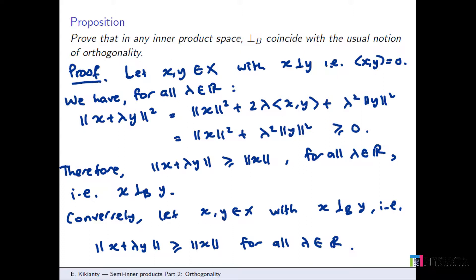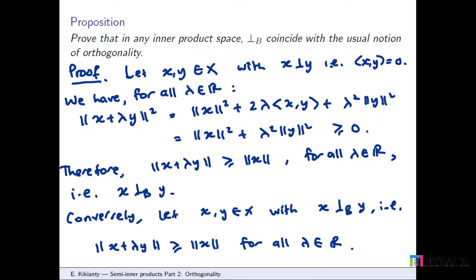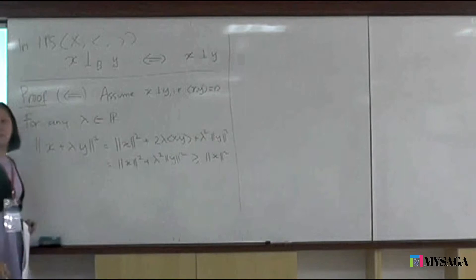We need to check that norm of x plus lambda y is greater than or equal to norm of x for all lambda in R. Starting from norm of x plus lambda y squared, I can expand this: norm x squared plus 2 lambda times inner product xy plus lambda squared norm y squared. But the inner product term is zero from the assumption. So the entire thing says this is greater than norm of x squared, and taking the square root completes the direction.